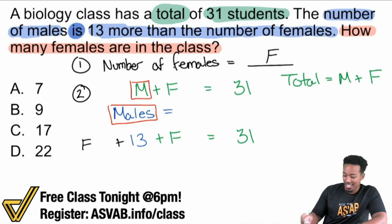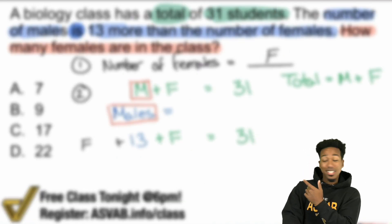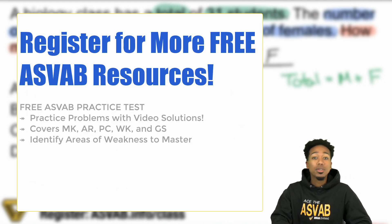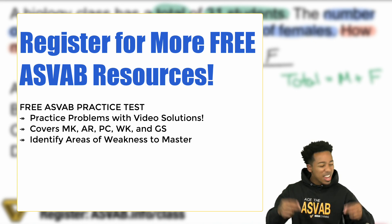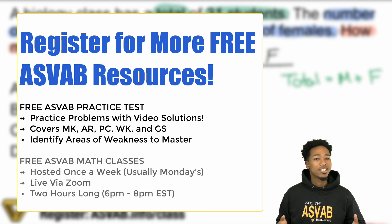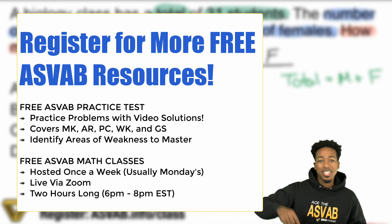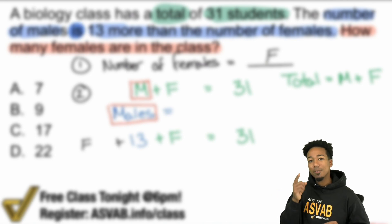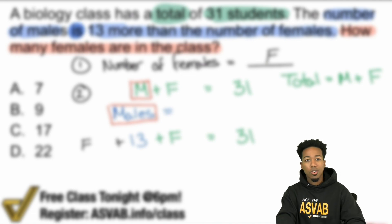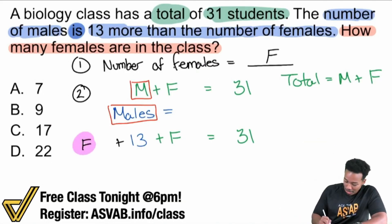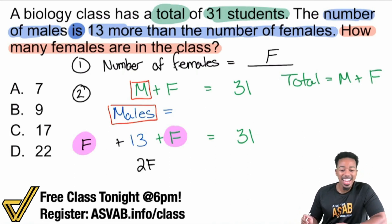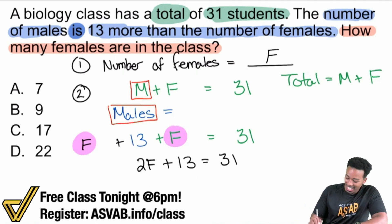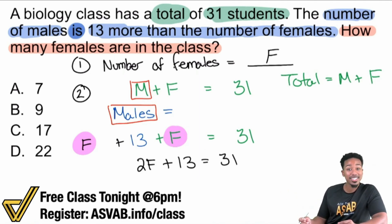So here we are. We're going to go ahead and solve this because we're looking for F — we're looking for females. We can solve it right here. Combine those like terms first. We have two F's, so: 2F. And then over there we have plus 13 equals 31. Now we're going to solve that equation. Solve this and we're good.